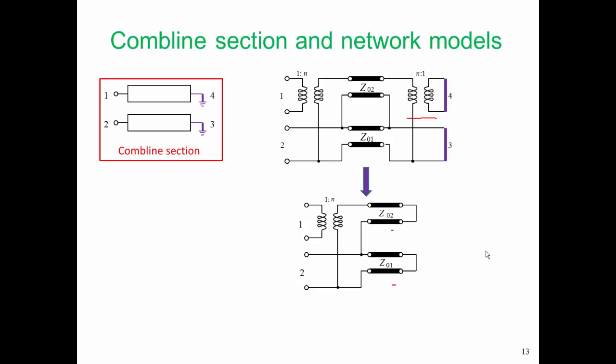If our comb line section is lambda on four long, then Z01 and Z02 will also be lambda on four long. We can replace those transmission lines using our shorthand for stubs, as shown on the left there. Now we need to quantify things here a little bit. By saying that FR is equal to F zero, we're saying that the resonant frequency of the stubs, that is the frequency at which they're lambda on four long, is the same as the center frequency of our equivalent circuit.